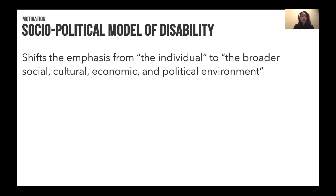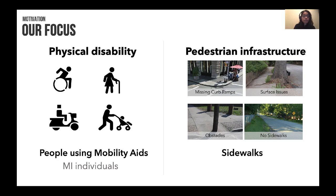The socio-political model of disability shifts the focus from the individual to the broader social, cultural, economic, and political environment, and this is the lens we use in this paper to study this problem. Our focus is on people using some form of mobility aid, and we focused on pedestrian infrastructure, more specifically sidewalks, where you see issues such as missing curb ramps, surface issues, obstacles, and so on.